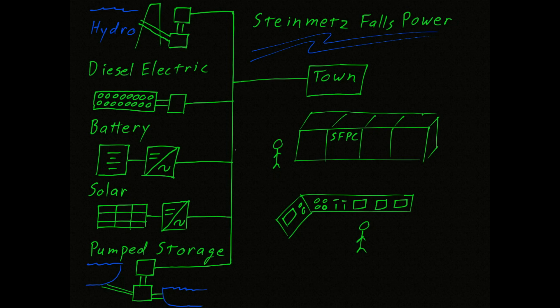The first thing you should know about Stymets Falls is that it's located in the middle of nowhere. We have no sources of power other than the electrical systems that are shown on the left of this diagram.